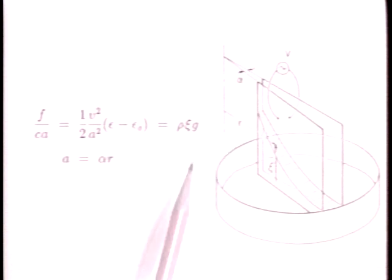Thus, the height of rise is inversely proportional to the square of the radial distance.